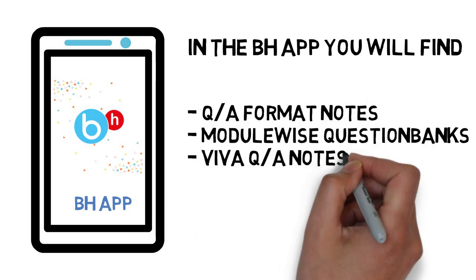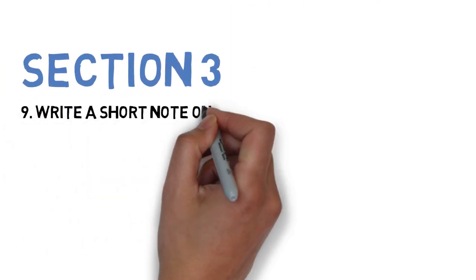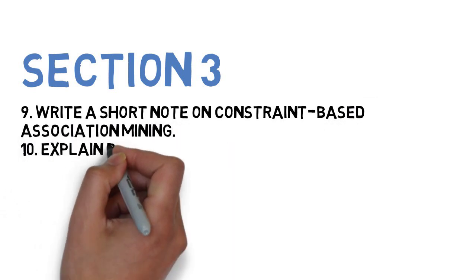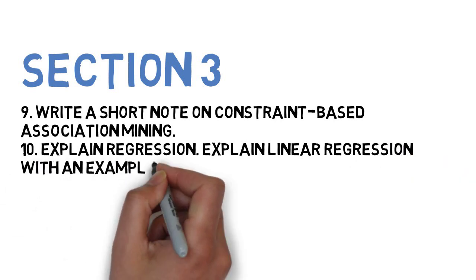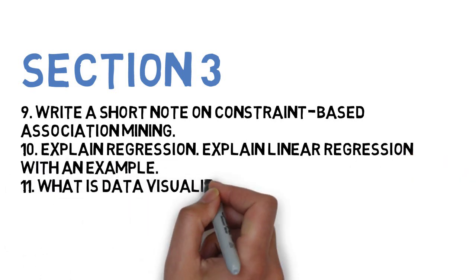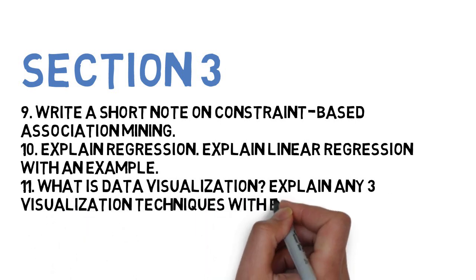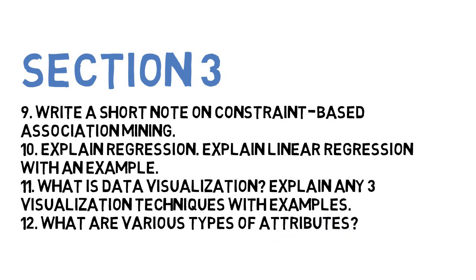In Section 3, you have four questions: Explain regression and linear regression with an example; What is data visualization and explain three visualization techniques with examples; What are the various types of attributes and describe different types of attributes; and Short note on data transformation and data analysis.